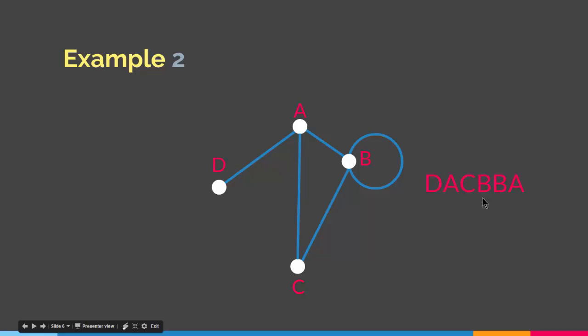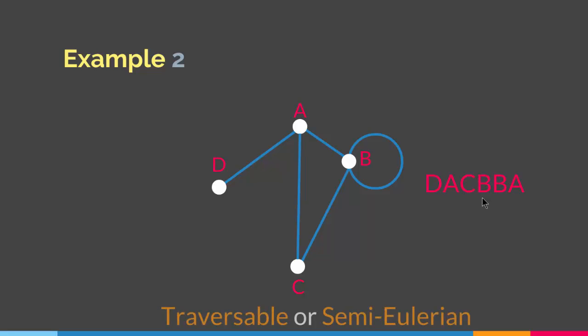So an Euler path is a path that visits every edge in the graph exactly once. Also, a graph that has an Euler path is called traversable or semi-Eulerian. Since this particular graph has an Euler path, it is called traversable or semi-Eulerian.